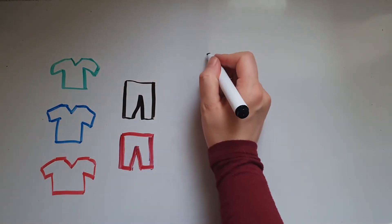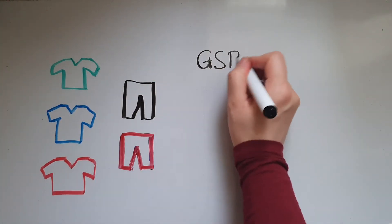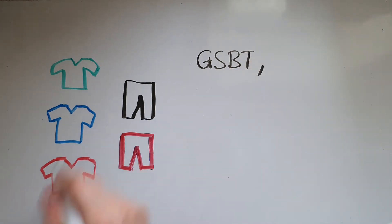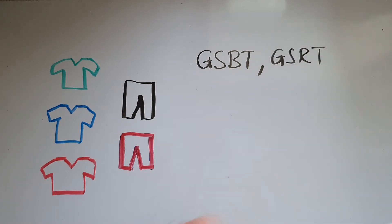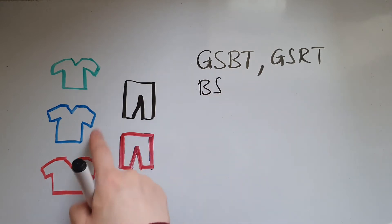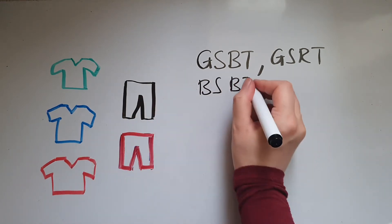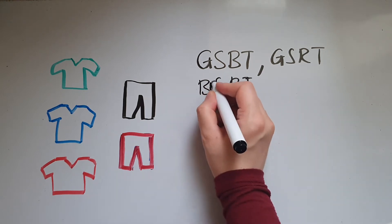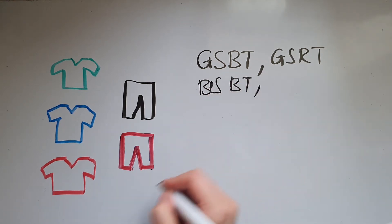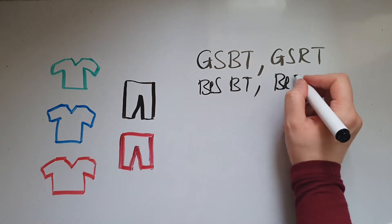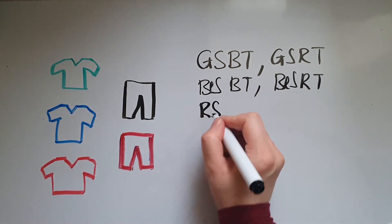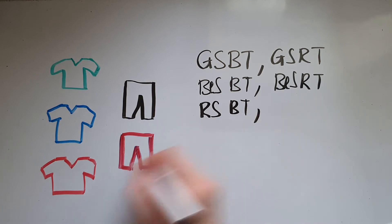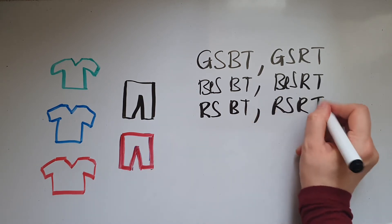So I could have the green shirt with black trousers, I could have the green shirt with the red trousers, I could have blue shirt with black trousers, I could have blue shirt with red trousers, I could have red shirt with black trousers, and red shirt with red trousers. So that's listing—that's a systematic listing strategy that I've used.